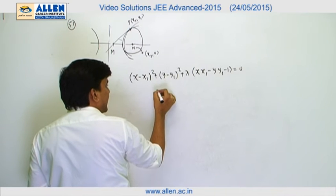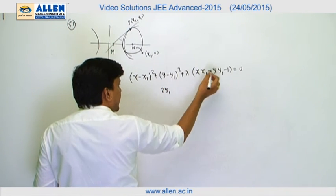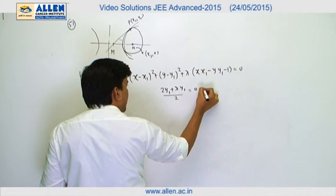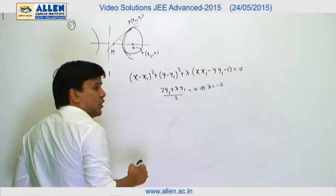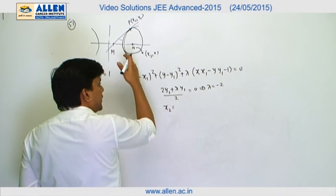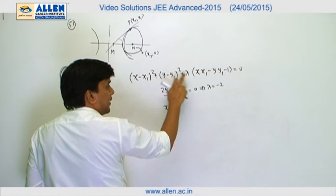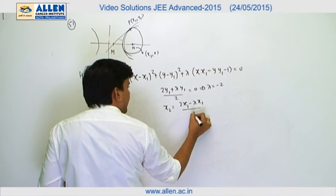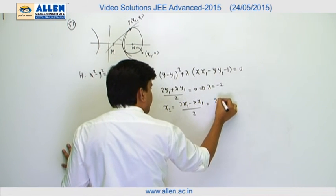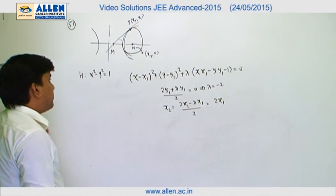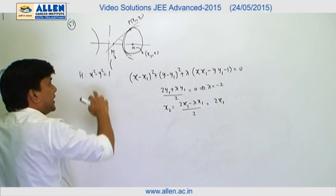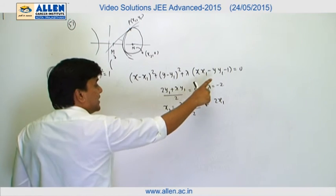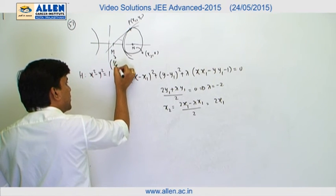The tangent at (x1, y1) is x·x1 minus y·y1 minus 1 equals 0. Setting the y-coordinate of the center to 0: 2y1 minus λy1 upon 2 equals 0, giving λ equals minus 2. The x-coordinate of the center gives x2 equals 2x1 minus λx1 upon 2 equals 2x1 plus x1 equals 2x1. Putting y equals 0 in the tangent equation, M has coordinates (1/x1, 0).